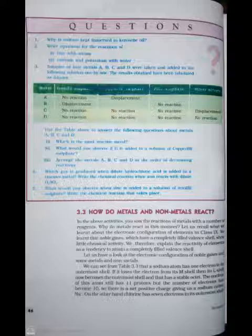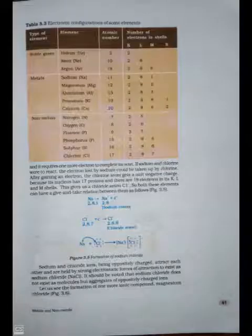Let us have a look at the electronic configuration of noble gases and some metals and non-metals. We can see from Table 3.3 that a sodium atom has one electron in its outermost shell. If it loses the electron from its M shell, then its L shell now becomes the outermost shell and that has a stable octet. The nucleus of this atom still has 11 protons but the number of electrons has become 10. So there is a net positive charge, giving us a sodium cation Na+. On the other hand, chlorine has 7 electrons in its outermost shell.